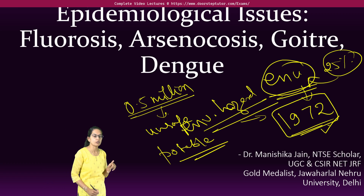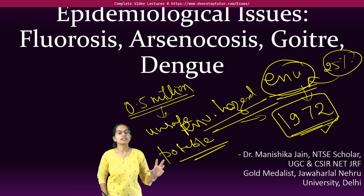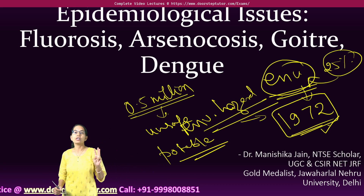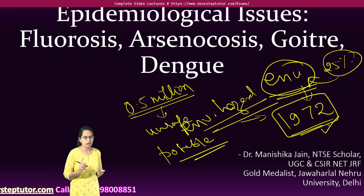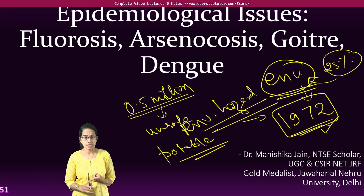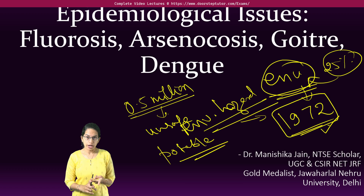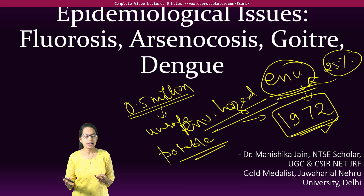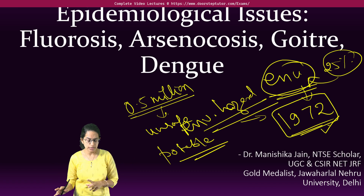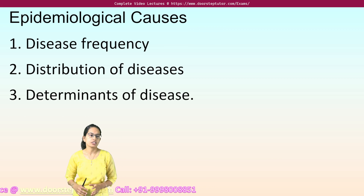The idea of this lecture is to understand the epidemiological issues, specifically targeting three to four epidemiological diseases: those caused by arsenic poisoning, caused by fluoride, caused by iodine deficiency or thyroid issues, and caused by vector-borne diseases. We are taking one individual example from each segment to understand.